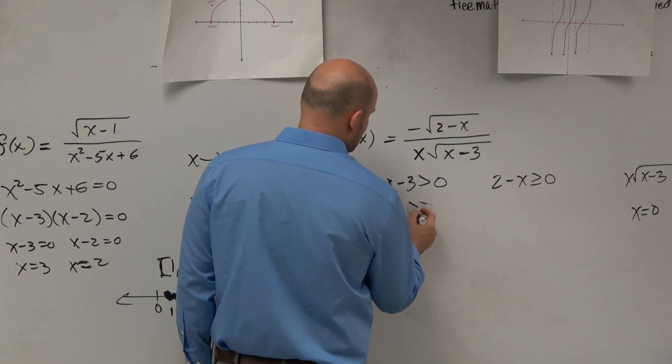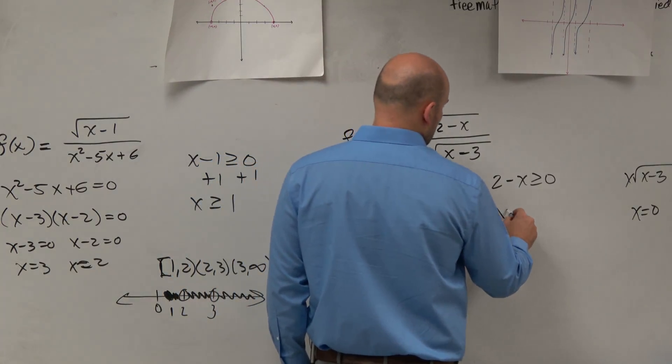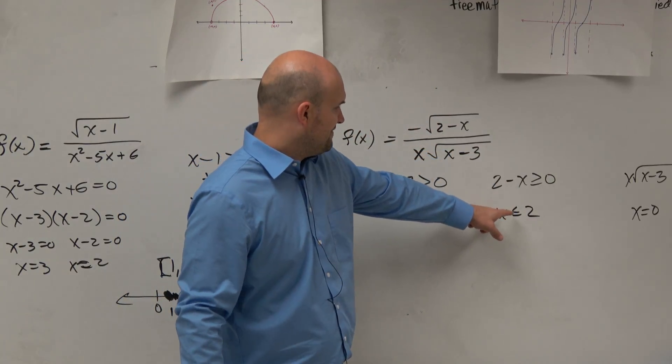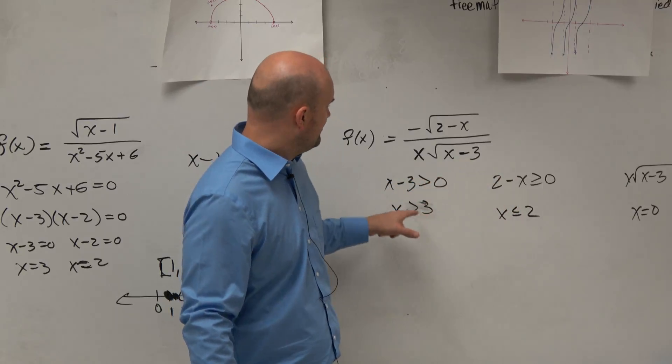Oops, I'm sorry. x is greater than 3. x is less than or equal to 2, because I already did one of those. So I have x has to be less than or equal to 2, but x has...